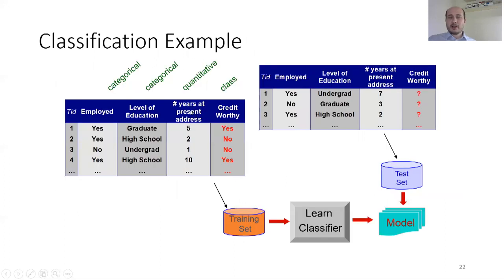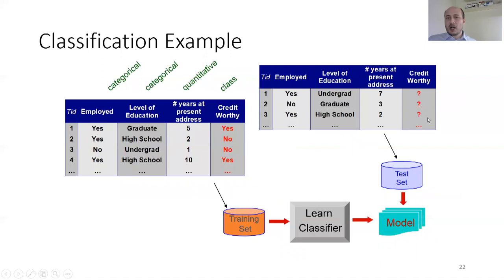We split our data into a training set and a test set. The training set has known class outputs, while the test set does not. After applying the training set and executing learning classifiers, we extract a model and apply the test set to find its output — for example, whether credit is worthy or not.